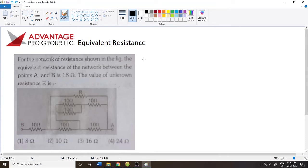For the network of resistance shown in the figure, the equivalent resistance network between points A and B is 18 ohms. The value of unknown resistance R is what we're searching for, and then you have some multiple-choice options.